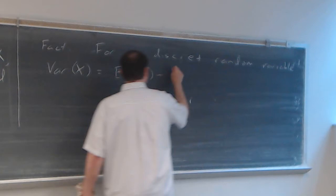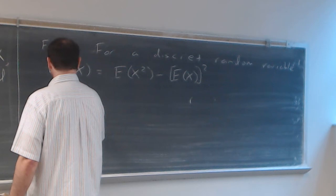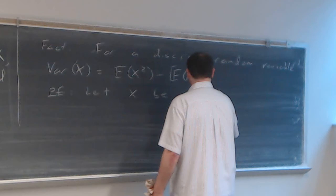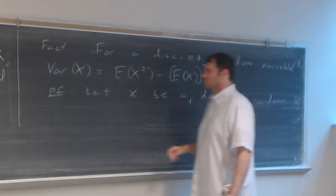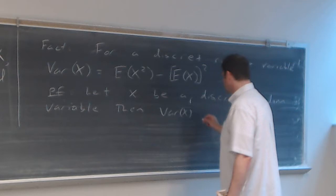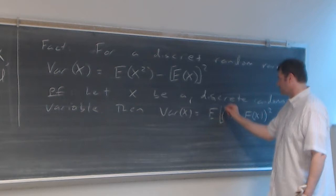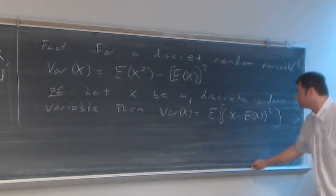And I'll prove that. So we're going to let x be a discrete random variable. Then by definition, the variance of x equals the expected value of (x minus the expected value of x), squared. This is the expected value of a function of x. Don't forget, the expected value of x is just a constant.